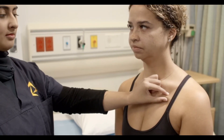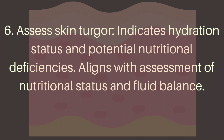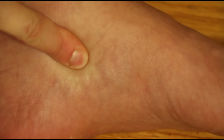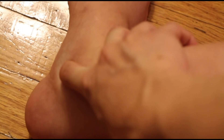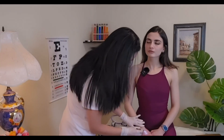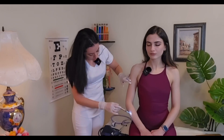Step 6: Assess skin turgor, which indicates hydration status and potential nutritional deficiencies. Aligns with assessment of nutritional status and fluid balance. Step 7: Palpate for oedema. Detects fluid accumulation, which can point to heart, kidney, or liver problems. Aligns with assessment of fluid balance and potential complications. Step 8: Palpate lesions with gloves. Protects both the patient and healthcare provider from infection. Aligns with infection control principles.